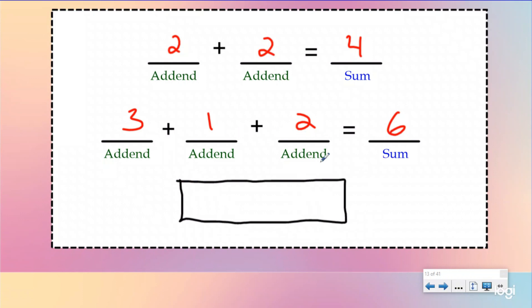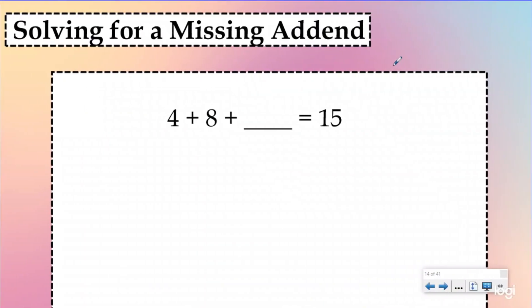So if I wanted to represent 3 plus 1 plus 2 in a tape diagram, I'd have a section for 3, a smaller piece for 1, and then a 2 over here, with a question mark for the total — which would obviously be 6. Instead of writing it in a traditional equation, we're using a part-whole model to help us solve addition questions. Today we're going to be solving for a missing add-in. We're going to know the sum and the other add-ins, and we're looking for what number makes this equation true.